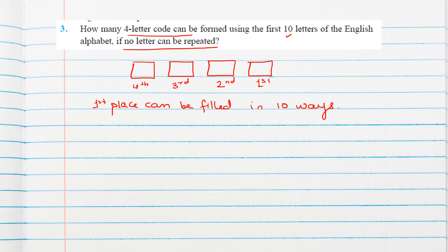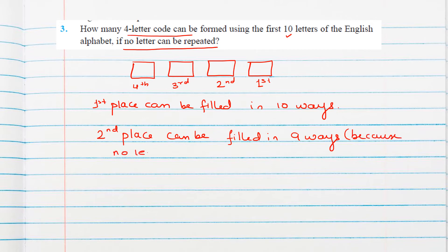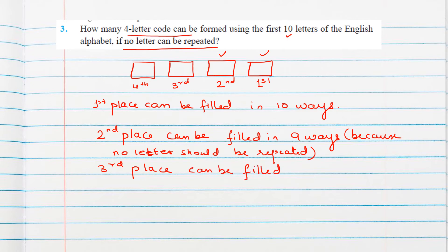Whatever letter is filled at the 1st place cannot be repeated at the 2nd place, since no letter can be repeated. That leaves 9 letters, so the 2nd place can be filled in 9 ways. For the 3rd place, we've already used 2 letters, so only 8 alphabets remain, and the 3rd place can be filled in 8 ways.